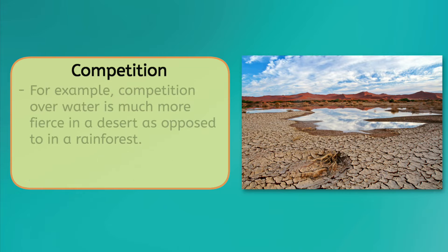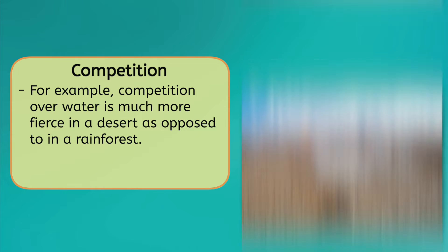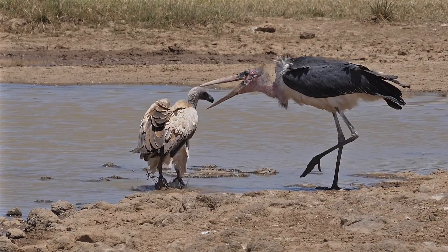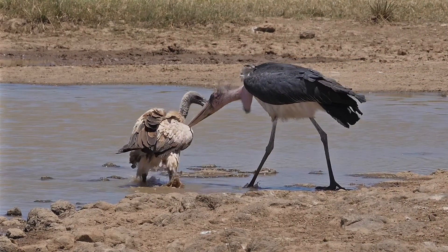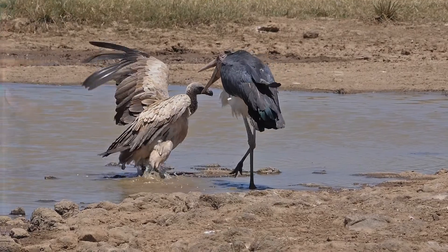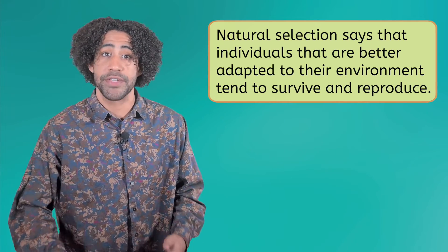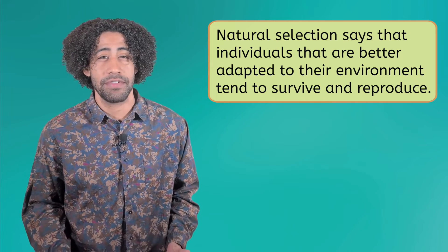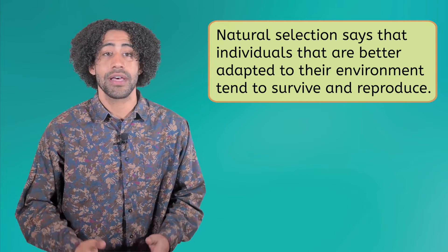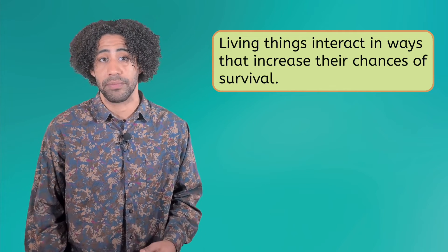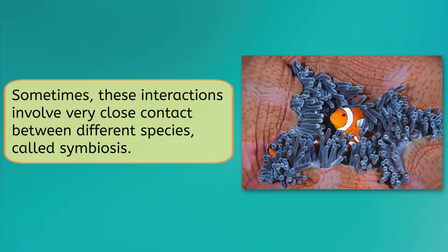For example, competition for water is much more fierce in a desert as opposed to in a rainforest. Organisms compete over a wide variety of things, but what these resources really boil down to is survival. Natural selection says that individuals that are better adapted to their environment tend to survive and reproduce. Not every living thing can achieve this. There's a lot at stake, so living things interact in ways that increase their chances of survival. Sometimes these interactions involve very close contact between different species, called symbiosis.